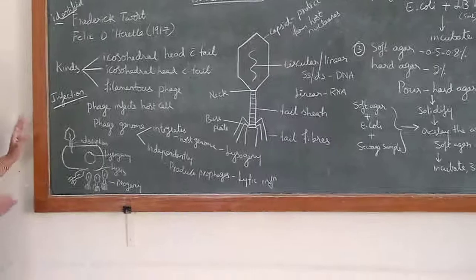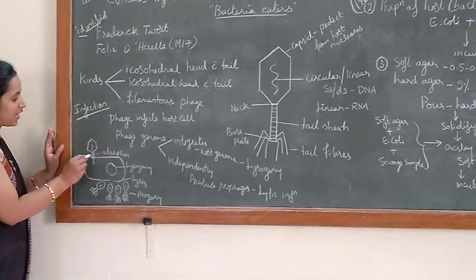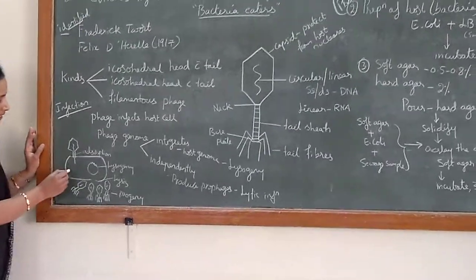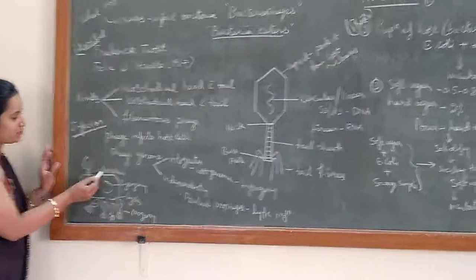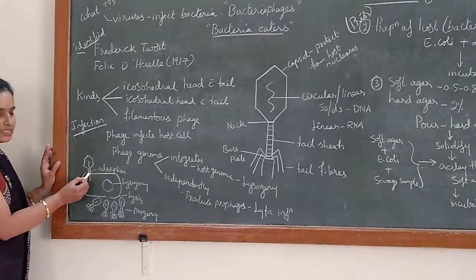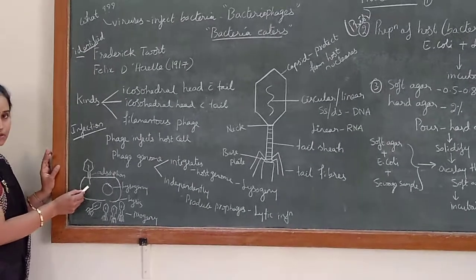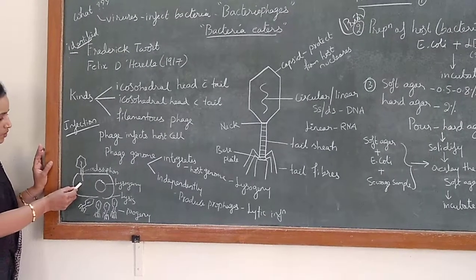So here you can see the picture where the phage particle has been absorbed into the bacterial cell. This is the bacterial cell where it has been attached or adsorbed to the host cell. And you can see the injection of the nucleic acid into the host cell.